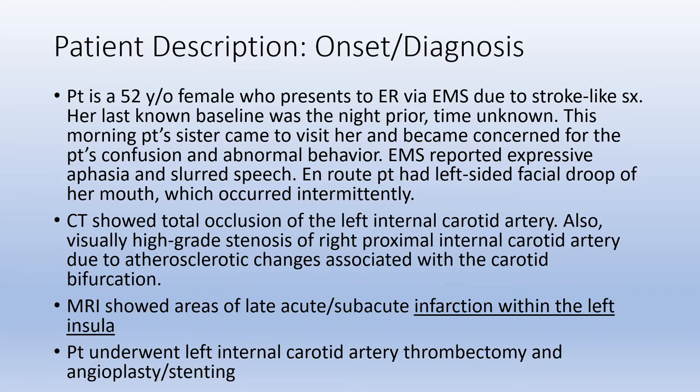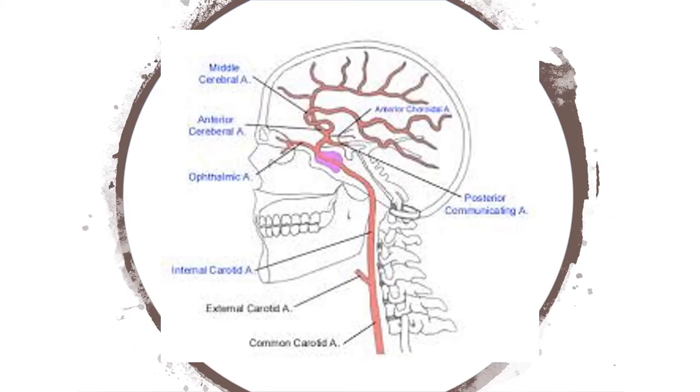She had left-sided facial droop of her mouth that occurred intermittently. Once in the hospital, CT showed total occlusion of the left internal carotid artery, and also visually high-grade stenosis of the right proximal internal carotid artery due to atherosclerotic changes associated with the carotid bifurcation. MRI showed areas of late acute to subacute infarction within the left insula. The patient underwent left internal carotid artery thrombectomy and angioplasty and stenting.